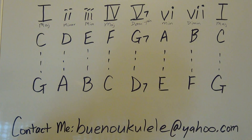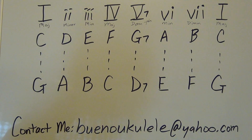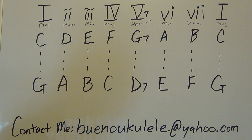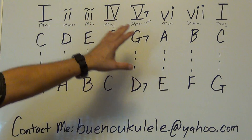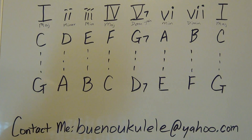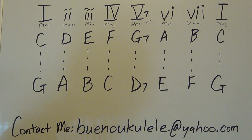Knowing where your 1-4-5 is really helps you form an idea of how the song is structured and how a strong song is kind of made up. So it would be a good idea to write in the Roman numerals above the chords that you've previously played, to help you understand and get a better idea.